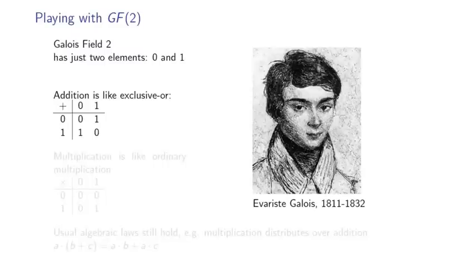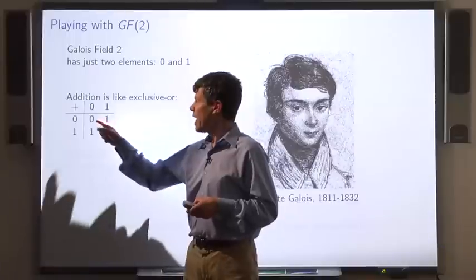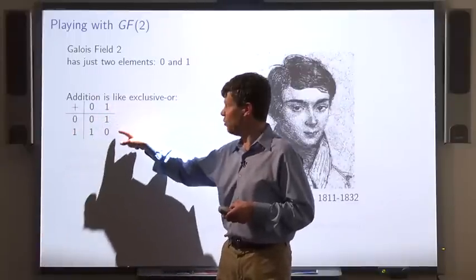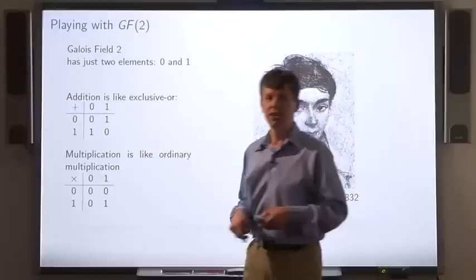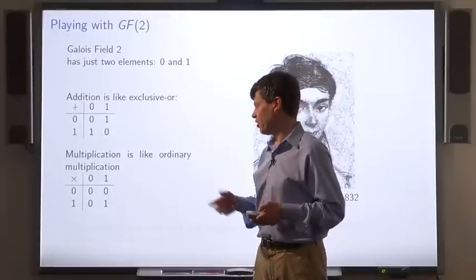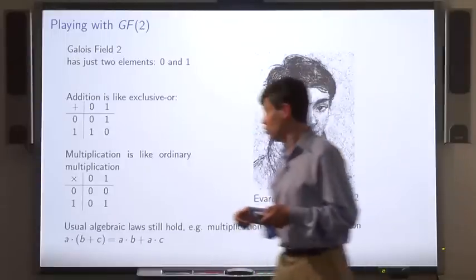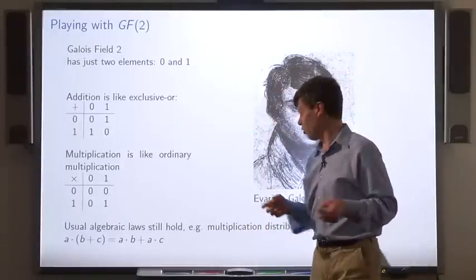Addition of 0 and 1 in Galois field 2 is just like exclusive OR. That is, adding 1 and 1 gives you 0. Multiplication is just like ordinary multiplication of 0 and 1. And the usual algebraic laws hold, for example, multiplication distributes over addition.